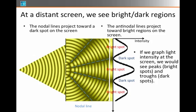If we were to graph the intensity of the wave at the screen, we would see peaks where the bright spots are and dark spots or troughs where the nodal lines are. And so this graph here, which plots intensity versus location, would go up and down.